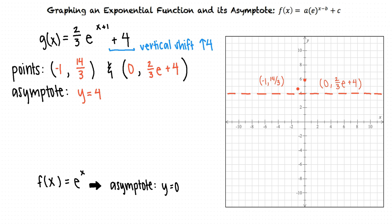Okay, I think that makes sense, so now we can graph our function, right? That's right. Now that we've found two points and the asymptote, we can complete the graph of g(x) equals two-thirds times e raised to the x plus one plus four.